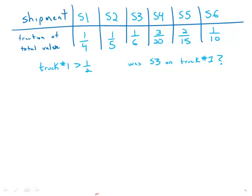The table shows the value of each shipment as a fraction of the total value of the six shipments. If the shipments on the first truck had a value greater than one half of the total value of the shipments, was S3, shipment three, shipped on the first truck?